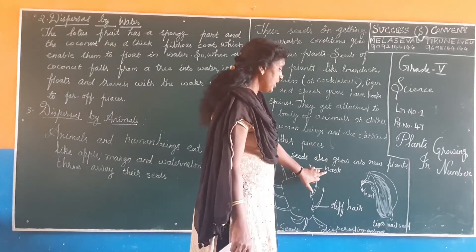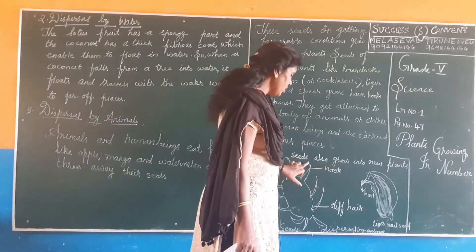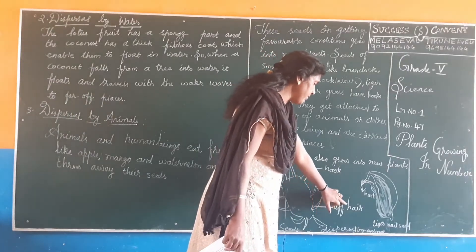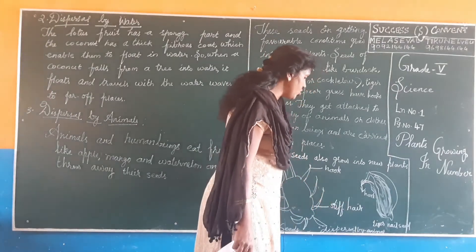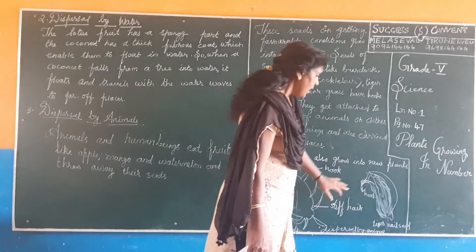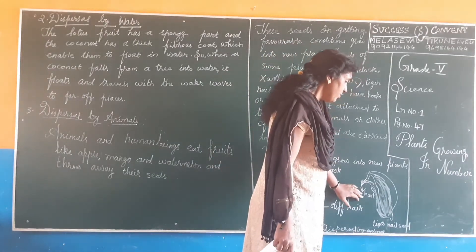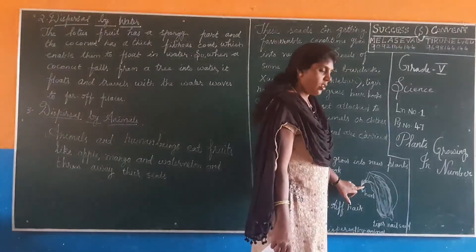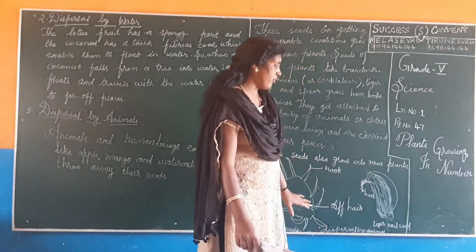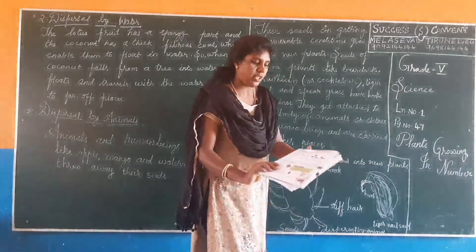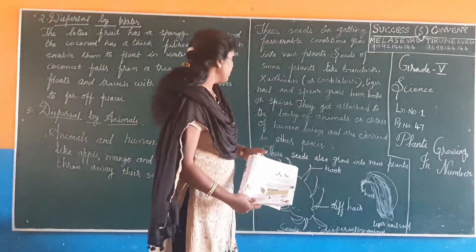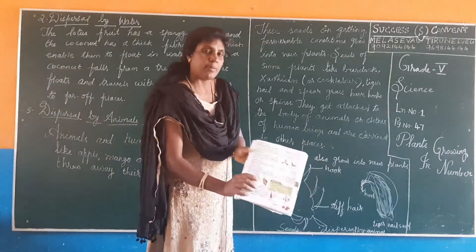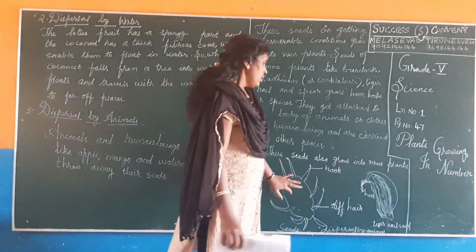This is a hook — H-O-O-K, hook. Here is stiff hair — S-T-I-F-F, stiff; H-A-I-R, hair. And this is the tiger nail seed, so this is a hook. You can see on page number 47, this picture is given here — dispersal by animals.